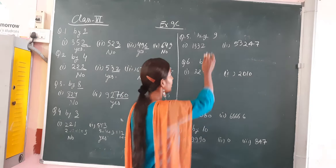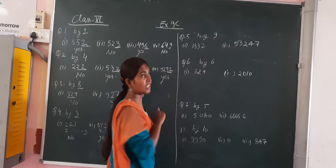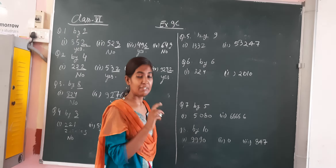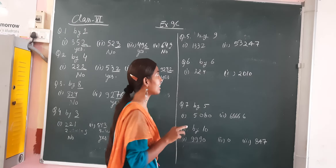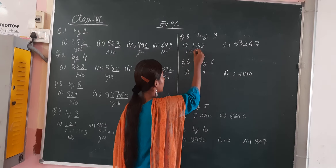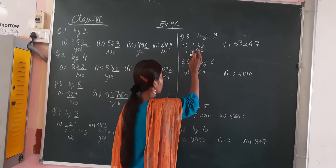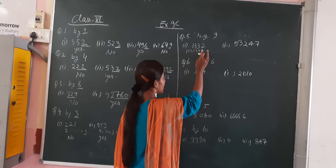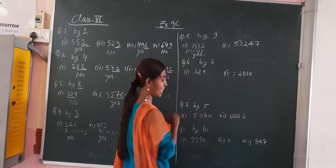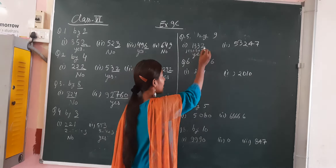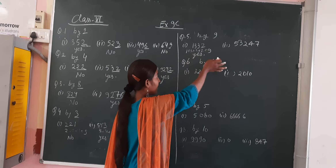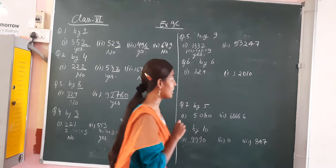Now check by 9 — whether this number is divisible by 9. How to check? If the digit sum is 9, then the number is divisible by 9. Check: 1 plus 3 plus 3 plus 2, then 4 plus 3 is 7, then 7 plus 2 is 9. So yes, this number is divisible by 9. The digit sum is coming 9, so this number is divisible by 9.